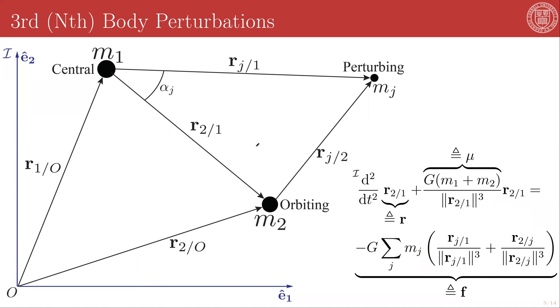As usual, we can write the position vector of our orbiting mass with respect to the central mass here as R2 rel 1, and we are going to write the position vectors of the jth perturbing mass with respect to the central body as Rj rel 1, and we will define an angle, alpha j, as the angle between R2 rel 1 and Rj rel 1.